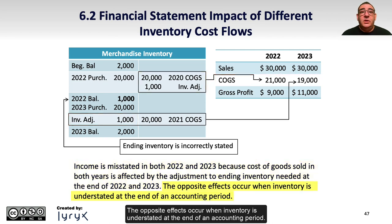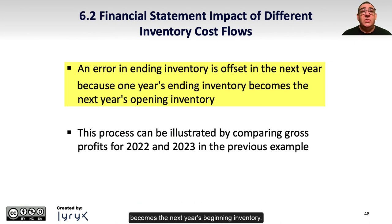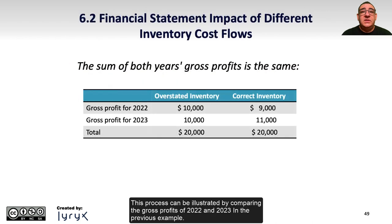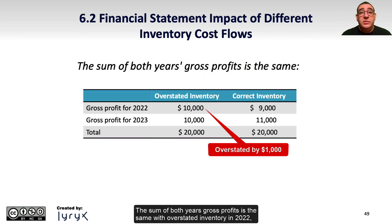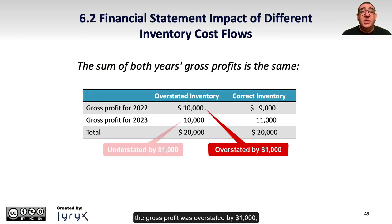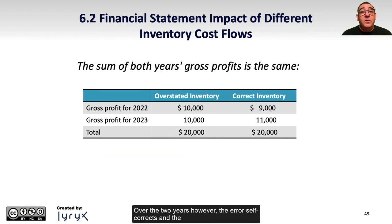The opposite effects occur when inventory is understated at the end of an accounting period. An error in ending inventory is offset in the next year because one year's ending inventory becomes the next year's beginning inventory. This can be illustrated by comparing the gross profits of 2022 and 2023: with overstated inventory in 2022, the gross profit was overstated by $1,000, which causes the 2023 gross profit to be understated by $1,000. Over the two years, however, the error self-corrects and the total gross profit for both years combined is $20,000.